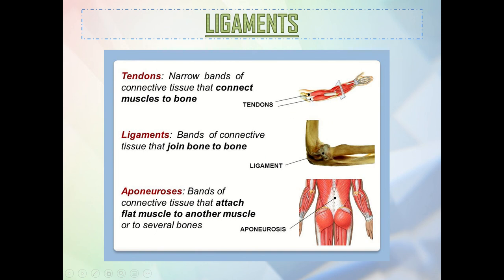Tendons are narrow bands of connective tissue that connect muscle to bone. Ligaments join bone to bone. Aponeuroses are bands of connective tissue that attach flat muscle to another muscle or to several bones. So to summarize: tendons connect muscle to bone, ligaments connect bone to bone, and aponeuroses connect muscle to muscle or to several bones.